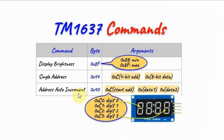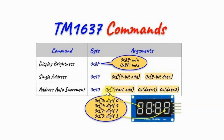We could also program the TM1637 in address auto-increment mode by sending 0x40, which allows us to send multiple data bytes to the display. We begin by sending the start address of the first digit, 0xC0, and then we can send four bytes to be displayed on the four digits of the module.